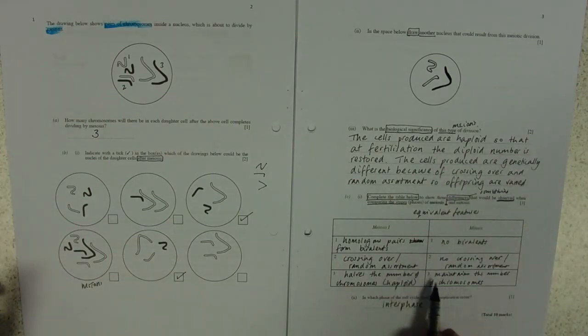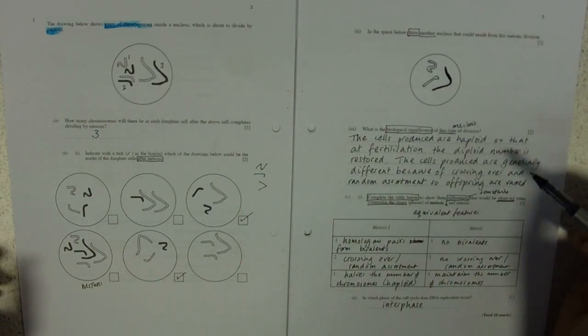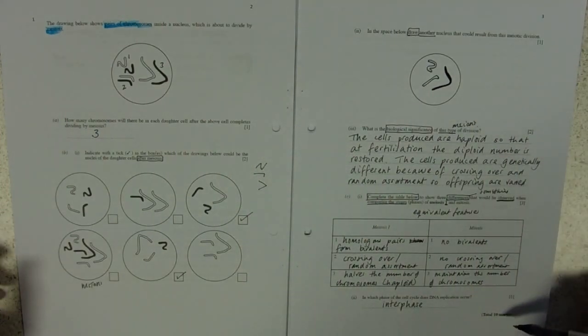These are all AO1 marks. Do you know the differences? And again AO1 for just knowing interphase. So you've kind of got half and half there, haven't you? You've got one, two, three, four, five out of the ten marks AO2. Five are AO1.